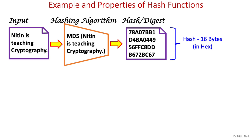Fixed-length hash and shorter than the input. Here the input is 'Nitin is teaching cryptography.' I am applying the MD5 hash function or algorithm to generate its hash value or digest. The generated hash value is 16 bytes, which is a fixed length in MD5. MD5 will always generate a hash value of 16 bytes regardless of the input size — this is standard with every hash function and an important property to conceal any information about the input.